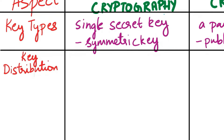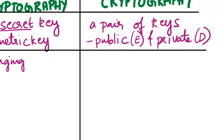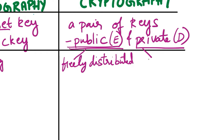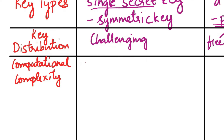The next aspect of comparison is key distribution. In symmetric cryptography, key distribution can be challenging as both parties must securely exchange and maintain the same secret key. In asymmetric cryptography, the public key used for encryption can be freely distributed, which simplifies key exchange, while the private key must be closely guarded.